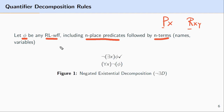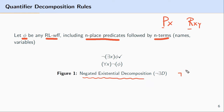The rule for negated existential decomposition applies to formulas where the main operator is the negation and the operator with the next most amount of scope is the existential quantifier.